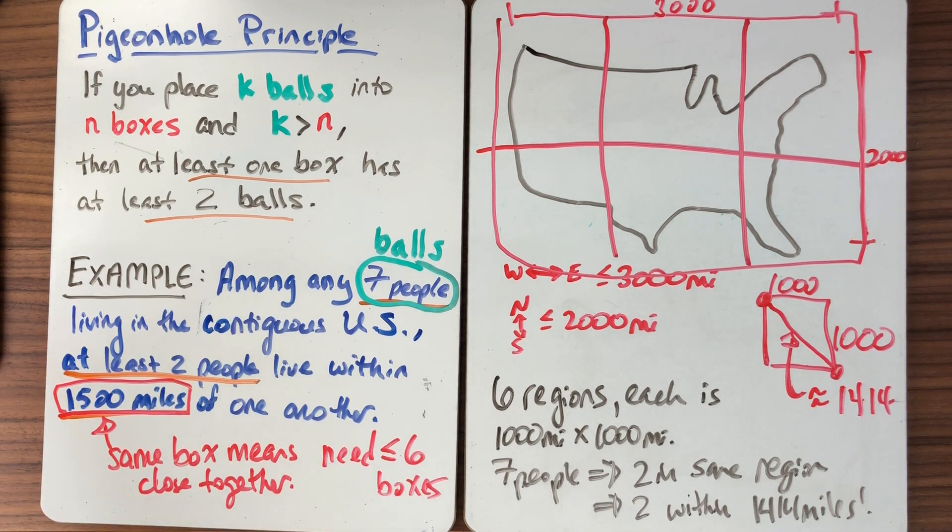So that's how we can take a problem like this. Our clues that it was pigeonhole is the at least two people have some property in common. Once we see that, pigeonhole principle. Now we think balls and boxes. I need to have more balls than boxes. So once you figure out what the balls are, you can construct your boxes based on this property people have to have. And you know how many boxes you're going to need. Here it was six. I had my seven people. Seven minus one is six. That's how I knew there were six boxes. I needed any two people in the same box to be close together. That gave me a hint as to how to construct my boxes and a little bit of geography finished the problem.